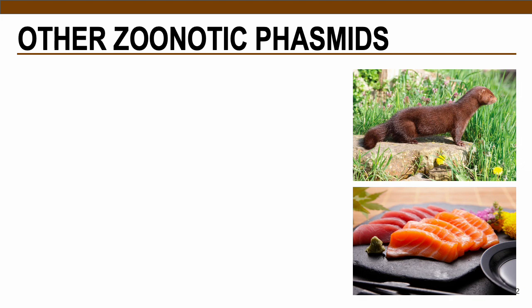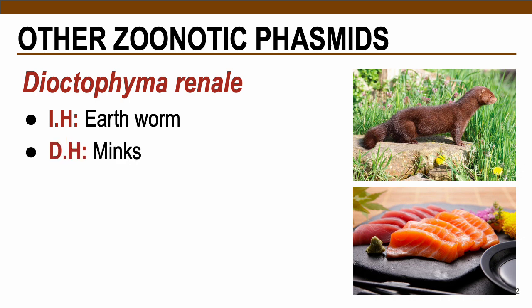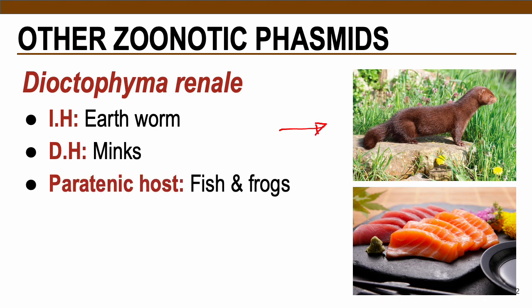In terms of the life cycle of Dioctophyma renale, this parasite requires earthworms as their intermediate host, while minks are their definitive host. For paratenic hosts — meaning these are also intermediate hosts not needed for development but serving to maintain the life cycle — these include fish and frogs.